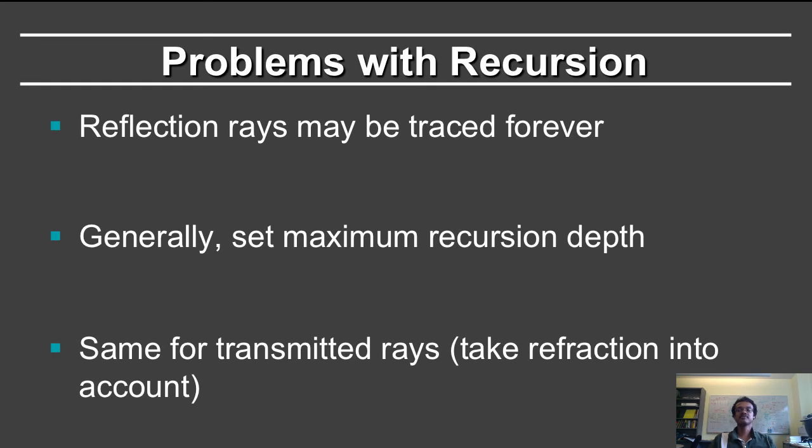To avoid this problem, we generally set a maximum recursion depth, like if you've traced five times, you stop. Other things you might imagine doing is set a threshold. Once the product of the reflectivity goes below a threshold, like 0.02, you stop the ray.